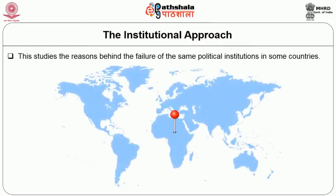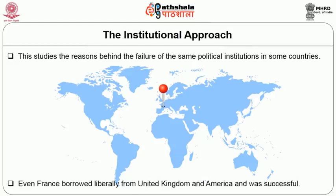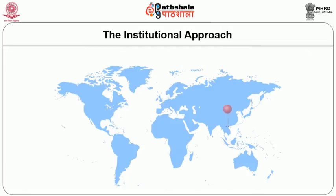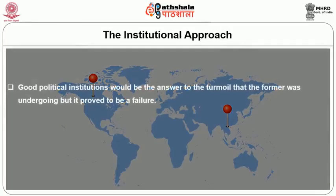The institutional approach studies the reason behind the failure of the same political institutions in some countries of Asia and Africa, which were otherwise successful institutions in the UK, USA, France, etc. Even France borrowed liberally from the United Kingdom and America and was successful. In Vietnam, America felt that good political institutions would be the answer to the turmoil the country was undergoing, but it proved to be a failure.